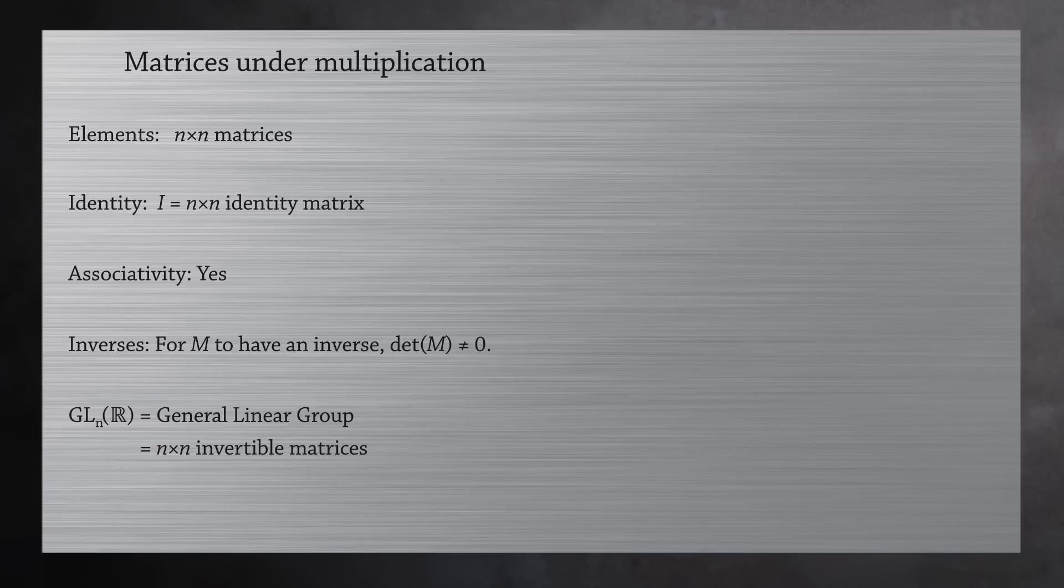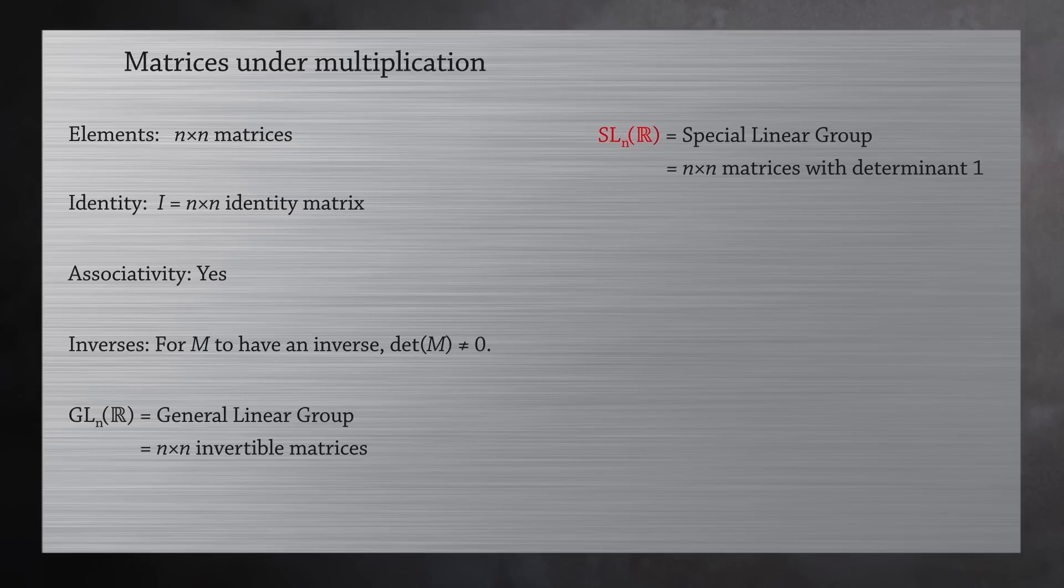An important subgroup of the general linear group is the n by n matrices with determinant 1. This group is called the special linear group and is written like this.